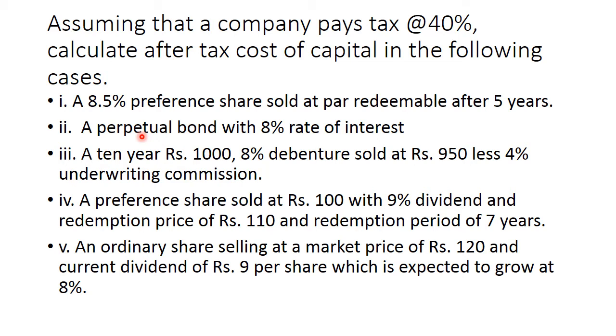Second, a perpetual bond with 8% rate of interest. Perpetual bond means it has got no maturity period. And the rate of interest on that bond is 8%. There is no par value, face value, redemption value, maturity period. A simple formula would be used over here.